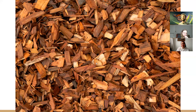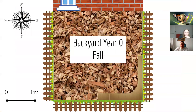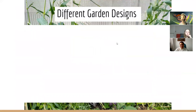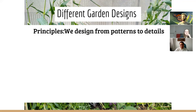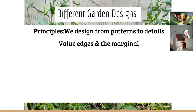Wood chips are the best soil amendment for your food forest. George Vanier's back garden started as a grass lawn. In year zero, before thinking about planting, he laid down a whole bunch of cardboard, covered it with chips, and it's now ready for next spring. Now, what garden designs do we want to use? Coming back to permaculture principles — design from patterns to details, and value edges and the marginal. We want to maximize the edges around our garden paths because they create the most biodiversity.